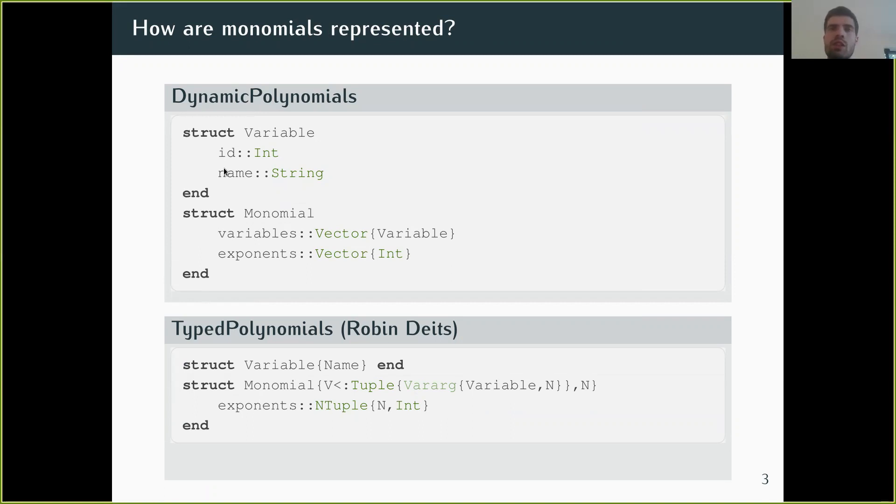The variable would be represented by a name for printing and an ID for fast comparison of variables. The monomial would be a vector of variables with their respective exponents. These two vectors have the same size.